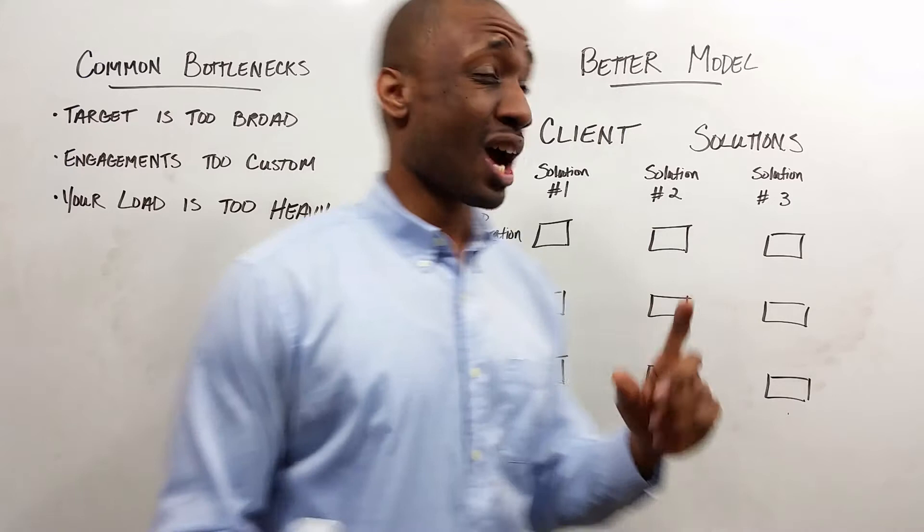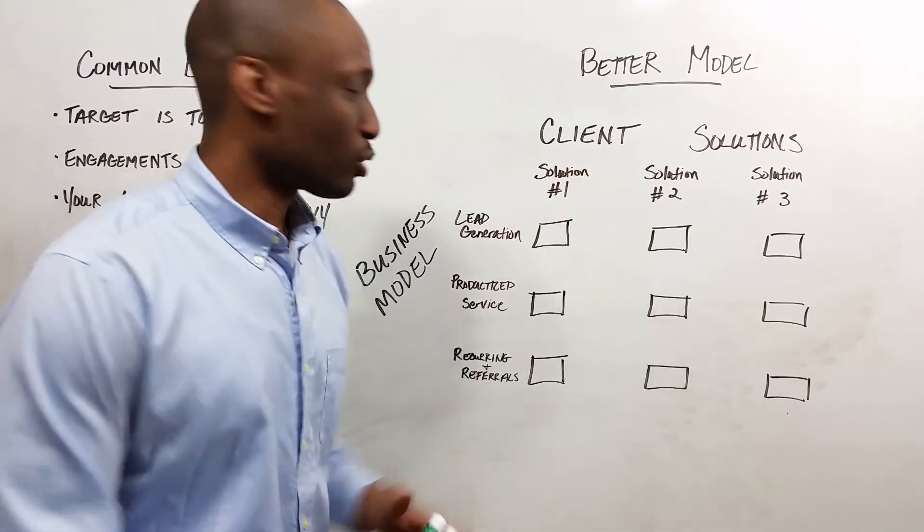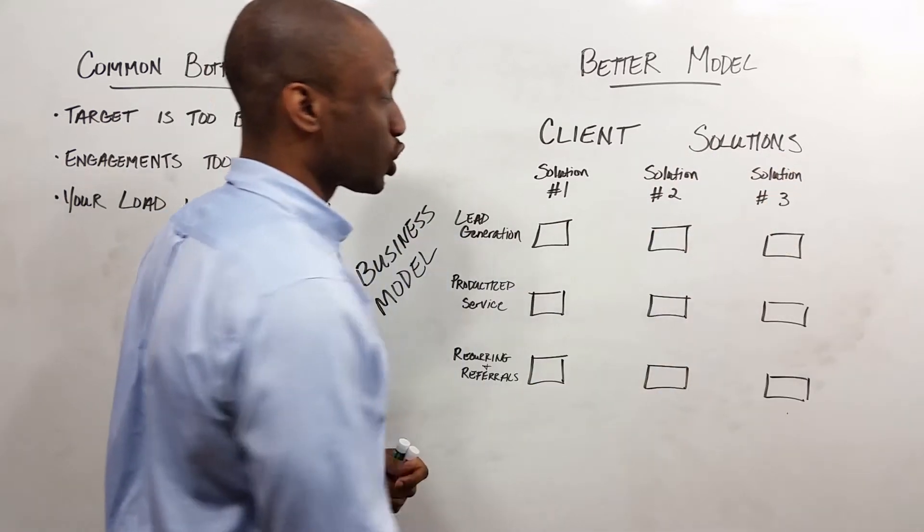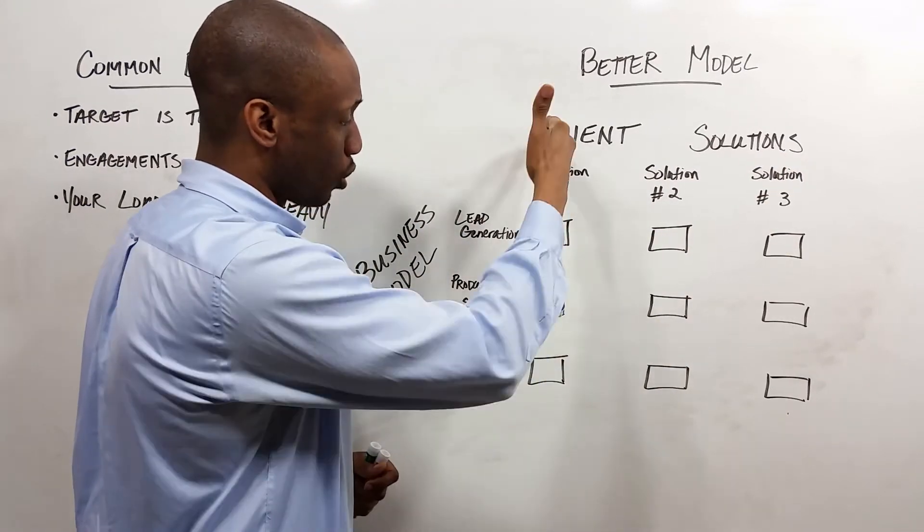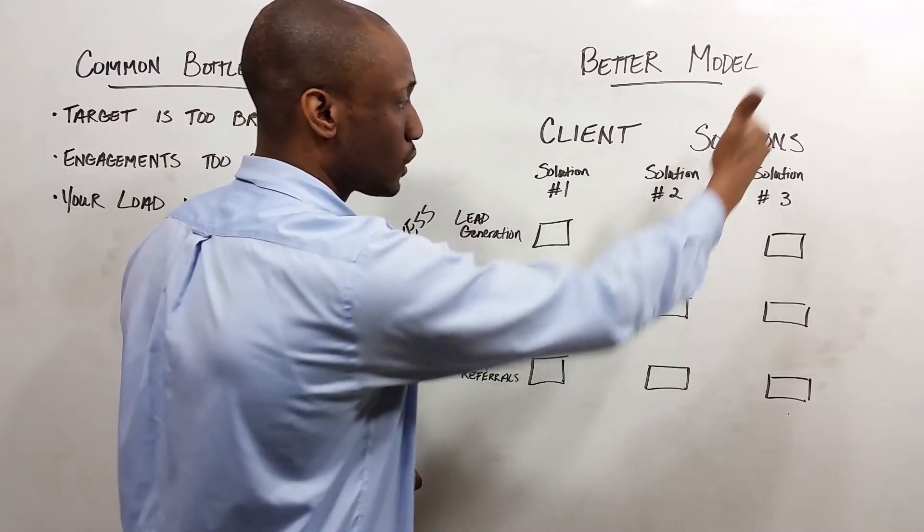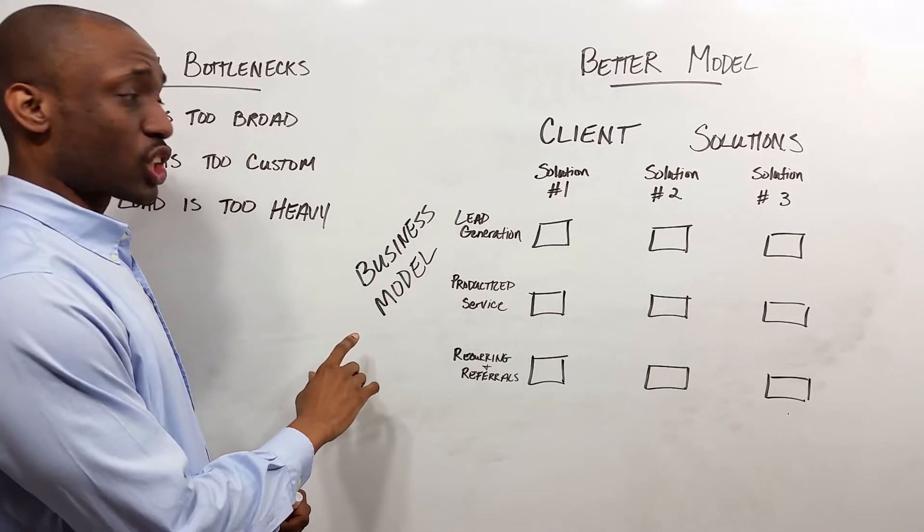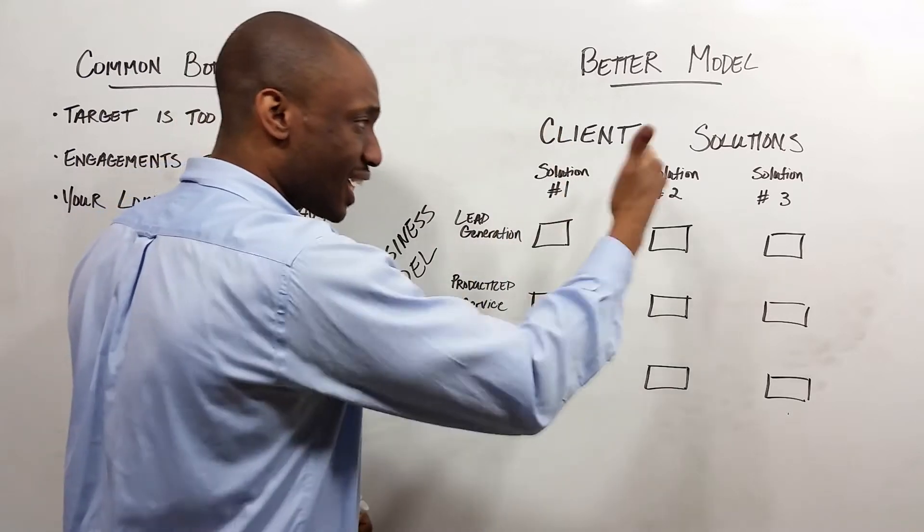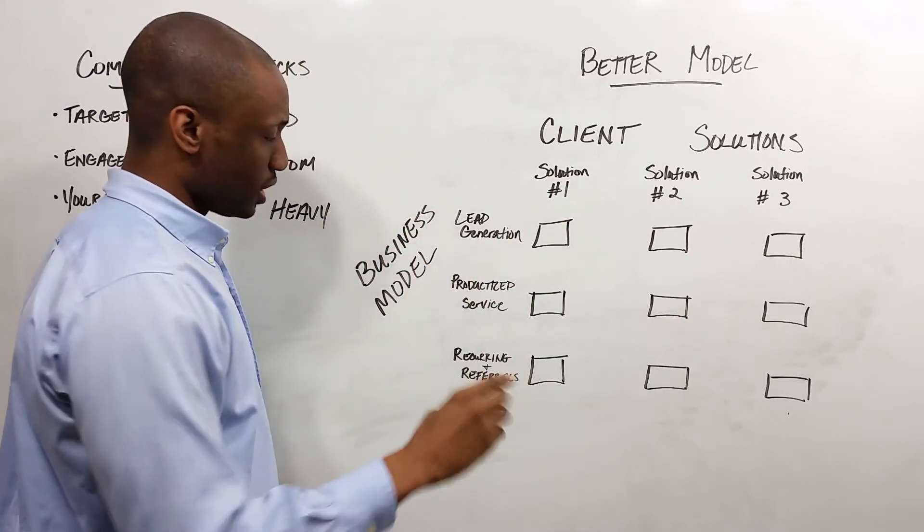So let's think about a better model. I've got a bit of a grid here. We've got client solutions. Let's assume that there are three core things you solve for: solution one, solution two, solution three. Then let's look at the actual business model.